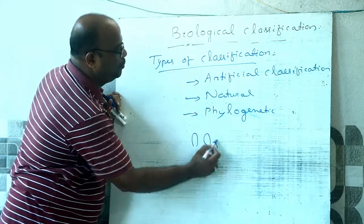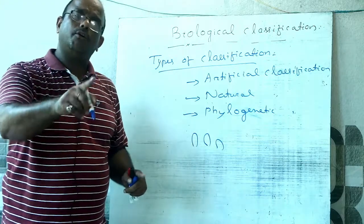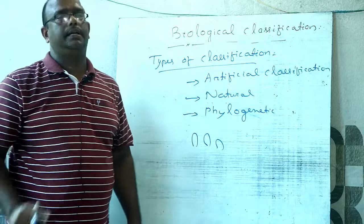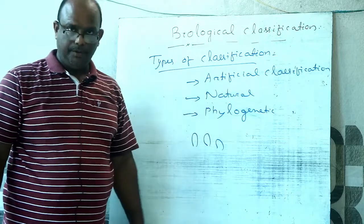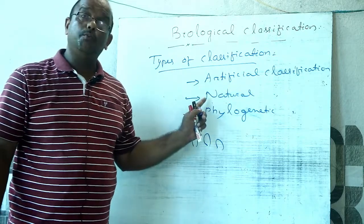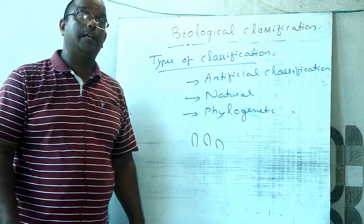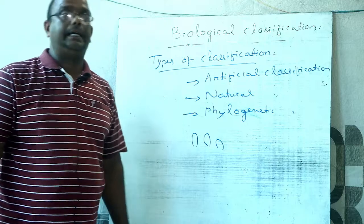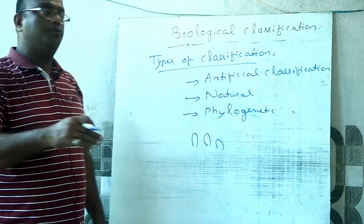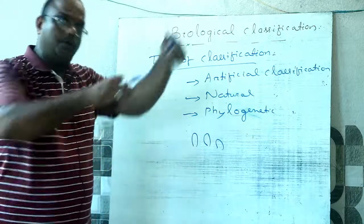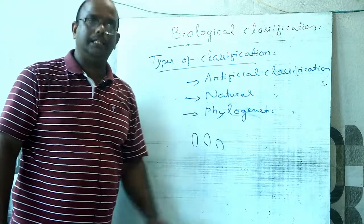When living organisms are grouped on the basis of one or few superficial characters, it is called artificial classification. When living organisms are grouped by considering their natural affinities, external structures, and many characters, it is called natural classification. When living organisms are grouped on the basis of their evolutionary trends, it is called phylogenetic classification.